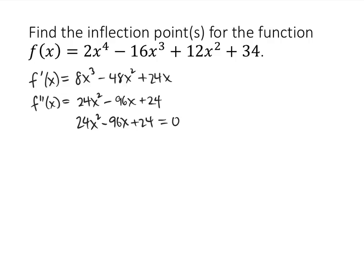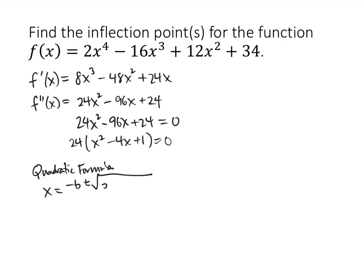That's a quadratic, and we can factor it a little bit. We can factor out a 24, so we get x squared minus 4x plus 1 equals 0. Unfortunately, we can't factor x squared minus 4x plus 1, so we're going to have to use the quadratic formula, which tells us that x equals negative b plus or minus the square root of b squared minus 4ac, all over 2a.